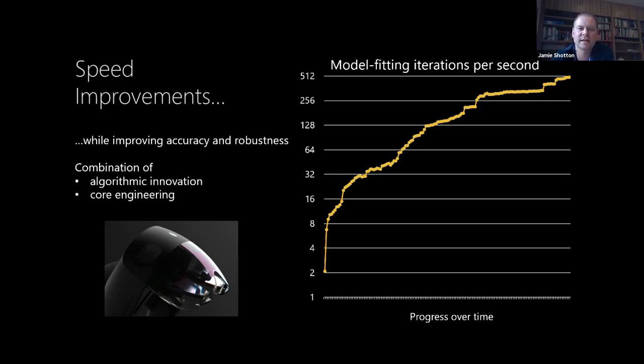And thankfully, we did, because we got there. And you can see on the right, this is the progress over time, each dot here is a check in in our code. And you can see the number of iterations of model fitting that we could do per second. Of course, you've got 30 or 60 frames per second coming off the camera. And you've got to do multiple iterations per frame. But we got our number up very nicely and simultaneously, we're able to improve the accuracy and robustness. Now a lot of this is low level optimizations, code optimizations, intrinsics and assembler and very low level stuff. But there's no way you get a factor of 200 just by doing that. And there was actually a lot of algorithmic innovation that had to go into this as well.